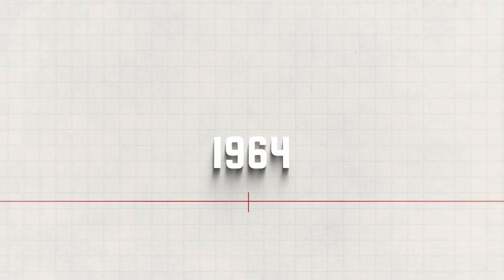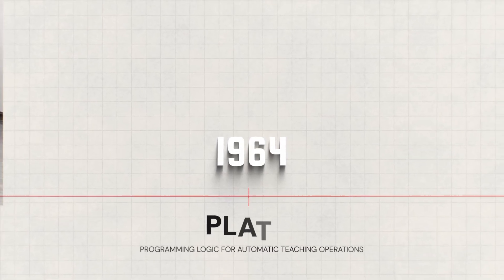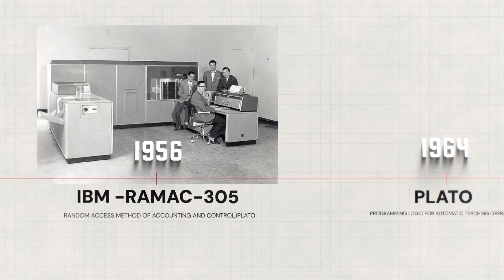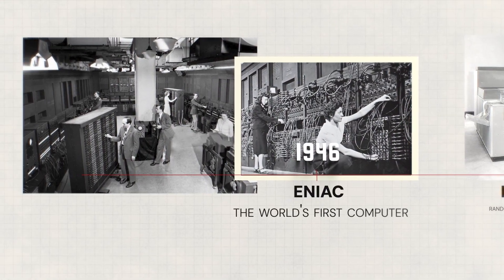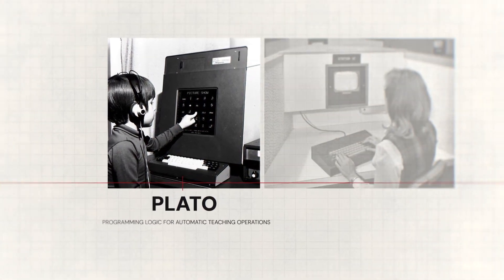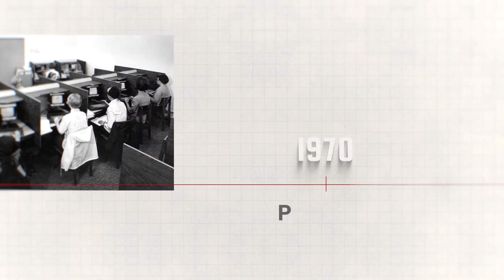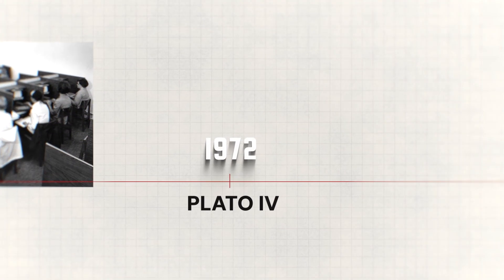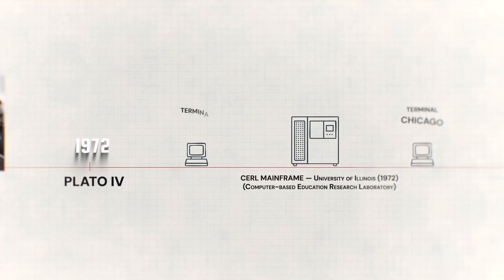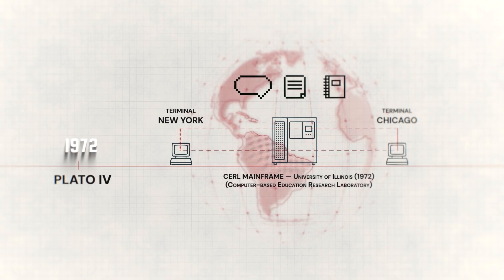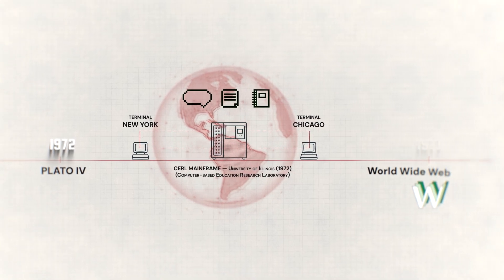The year is 1964, and by now, the programming logic for automatic teaching operations has completely changed the world. Because before this, computer screens basically didn't exist. But for the first time ever, students could actually see what they're learning. And not only that, Plato instantly revolutionized screens forever. Because by 1972, the Plato Four connected over a thousand different students simultaneously from terminals around the world. And within an instant, students were chatting, sharing notes, and helping each other with homework. And unknowingly, they were creating the first ever social network, a full 20 years before the internet technically existed.